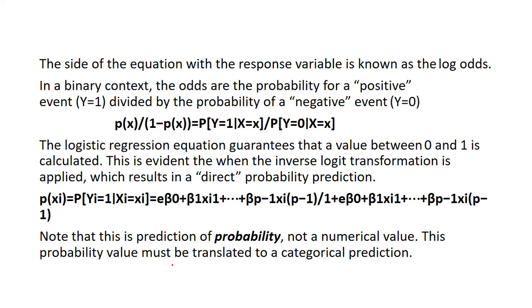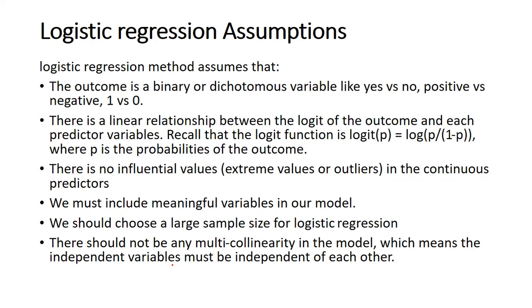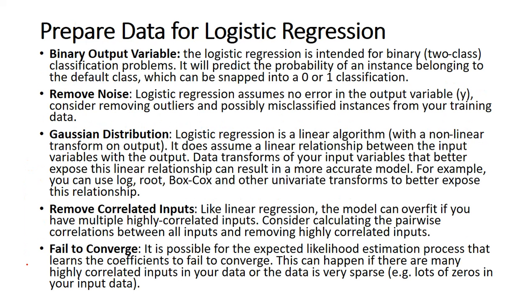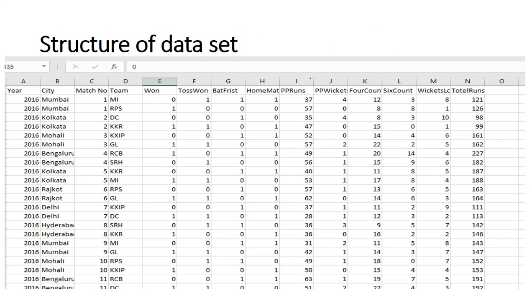Some key assumptions of logistic regression: the outcome must be a binary or dichotomous variable like yes/no or 1/0; there is a linear relationship between the logit of the outcome and each predictor, where logit(p) = log(p / (1 - p)); and there should be no influential outlier values in continuous predictors. To prepare data for logistic regression, we need binary output variables, remove noise, check for Gaussian distribution, and remove correlated inputs.